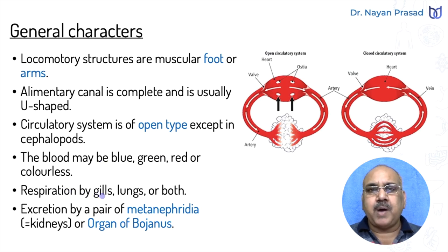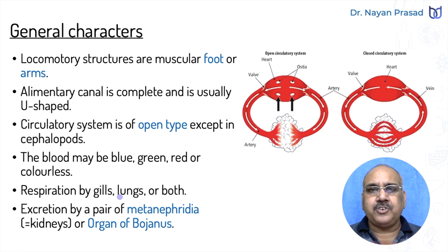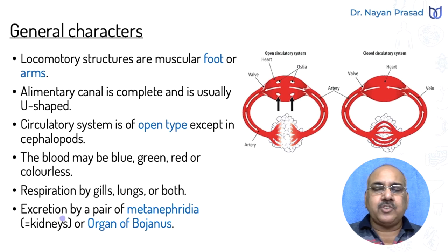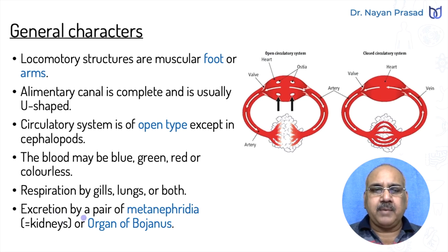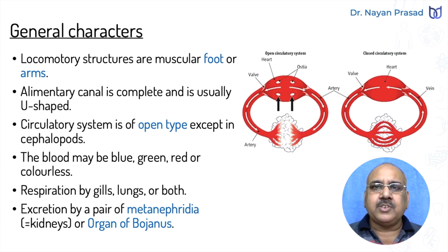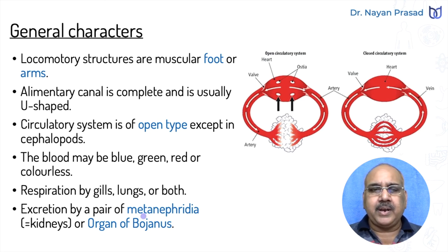Respiration takes place by gills or lungs or both. Members which live on both land and in water have both types of respiratory structures — gills and lungs, also called pulmonary sacks. Excretion takes place by a pair of metanephridia, also called kidneys or organ of Bojanus. In annelids, we have seen protonephridia — primitive nephridia — here we see developed nephridia, the metanephridia.